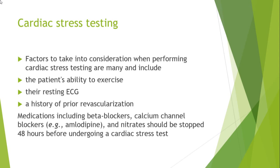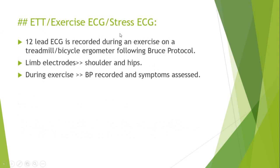The first stress test is called the ETT, also known as the exercise ECG or stress ECG. This is a 12-lead ECG recorded during exercise on a treadmill or bicycle ergometer following the Bruce protocol. For weaker or older patients, we may use the modified Bruce protocol. The patient walks and then runs on the treadmill or bicycle ergometer. Since the limbs are moving, we place the upper limb electrodes on the shoulders and the lower limb electrodes on the hips.